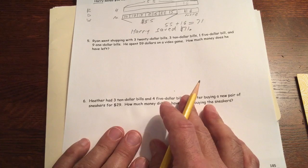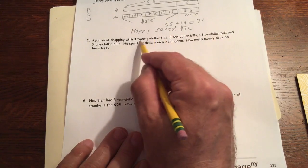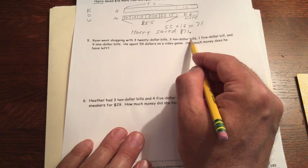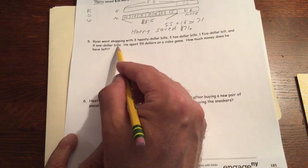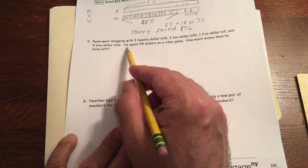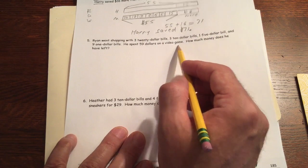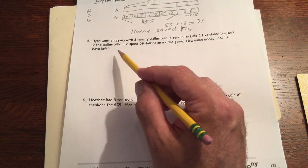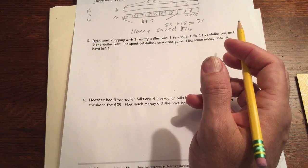Ryan went shopping with three $20 bills, three $10 bills, one $5 bill, and nine $1 bills. He spent $59 on a video game. How much money does he have left? So he has money, he spends money, and he has money left.